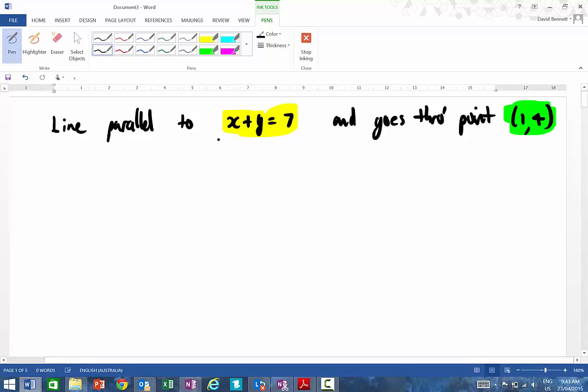So what I have to do with this thing here is I have to rearrange that in the form of y equals mx plus c, so y is going to be equal to negative x plus 7. Therefore, the slope is equal to negative 1.